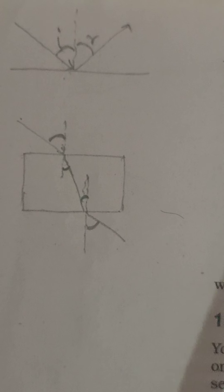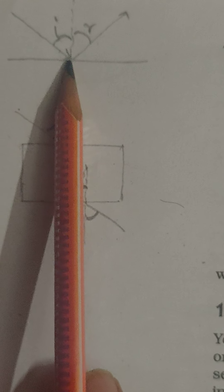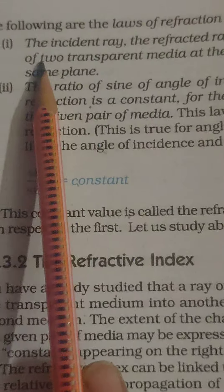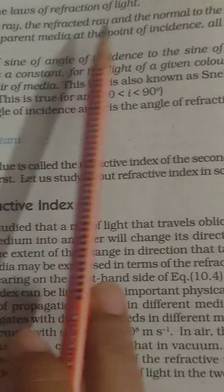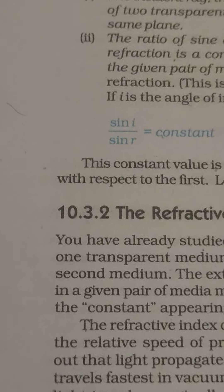This is the picture I have drawn for reflection and this is the picture for refraction. In case of reflection, the first law states that the angle of incidence, angle of reflection, and the normal lie in the same plane. Here also, for refraction, it is stated that the incident ray, the refracted ray, and the normal to the interface of two media at the point of incidence all lie in the same plane.